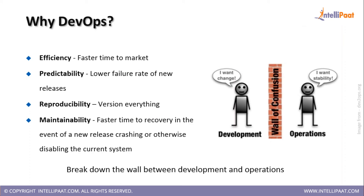So why DevOps? The first advantage is obviously efficiency. Customers require their application to be deployed faster and more efficiently without confusion or errors. Development and operations have always had some confusion, but if they start interacting between the various stages — for example, building a code or developing — and if they have a process wherein they can interact with the operations team, get feedback, and make changes, the output would be much better.